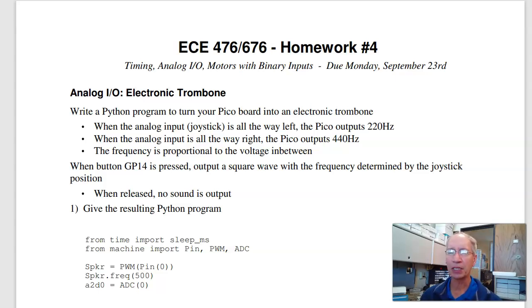So the first problem is electronic trombone. Come up with a Python program to let you play between 220 Hz and 440 Hz as you move the potentiometer.